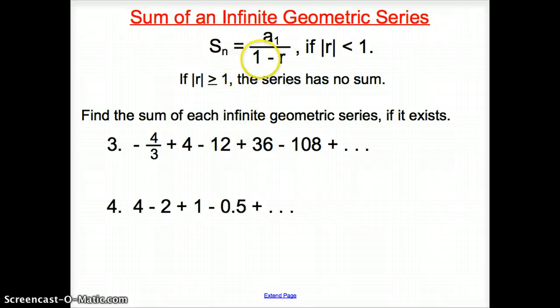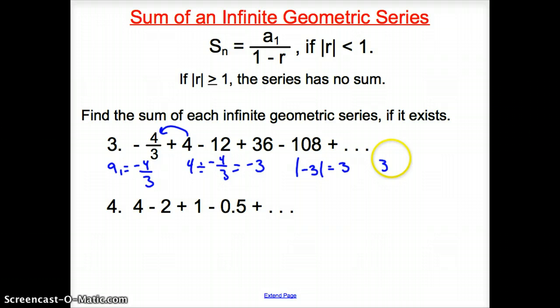First thing we have to do is find our R. Because we know that the first term is going to be a sub 1. And that's going to be negative 4/3. Now how do we find our R? We have to go 4 divided by a negative 4/3. That gives us a negative 3. Well, we have the absolute value of negative 3 is going to be a 3, right? And is 3 greater than 1? Yes, it is. And so since it's greater than 1, do we have a sum? We do not have a sum. So then we say no sum exists.